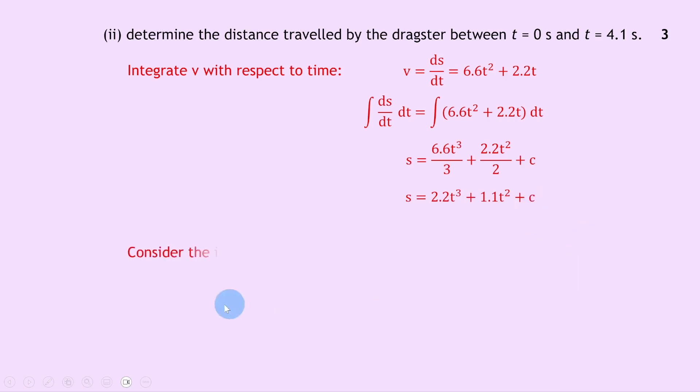To find what this constant c is, we need to consider the initial conditions. That means what happens when time t equals 0. The dragster won't have moved, so its displacement s will equal 0 at this time. Therefore, if we plug in t equals 0 and s equals 0, we get c equals 0. So we can rewrite s as s equals 2.2t cubed plus 1.1t squared.